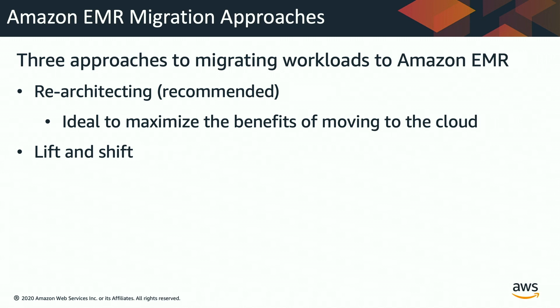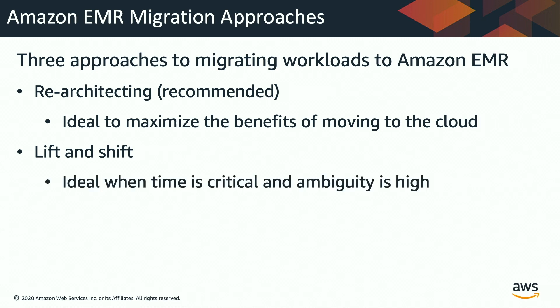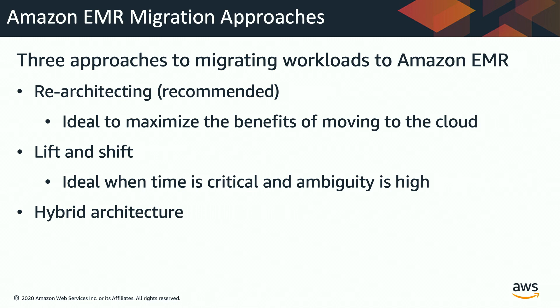The second approach is lift and shift, where you migrate your entire workload directly to Amazon EMR. It's ideal when time is critical and you just need to migrate. The third approach is hybrid architecture — that means you are in a time crunch but also want to re-architect. In that case, you lift and shift your existing applications and re-architect the architecture for new applications.